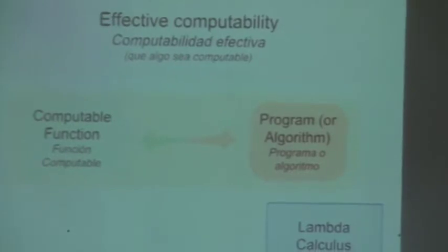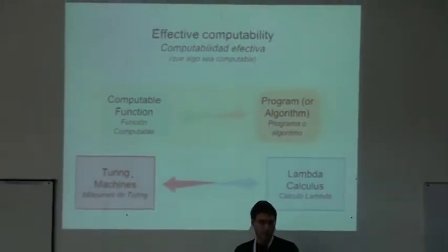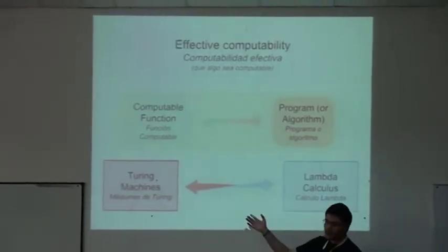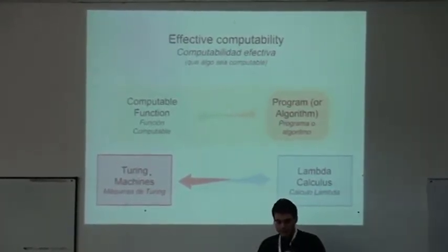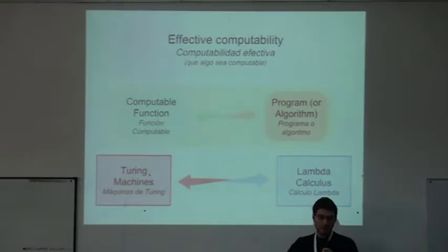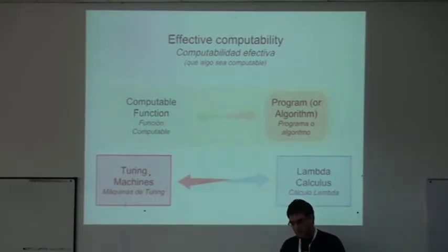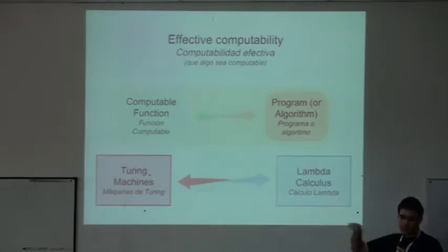In that way, Lambda Calculus is equivalent to Turing machines, for those of you who know the Turing machine model. But Lambda Calculus is more focused on transformation rules than on the machine that implements those transformations. In that sense, it is closer to software. The main concept here is that we can express every program in terms of Lambda Calculus.